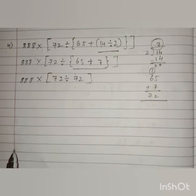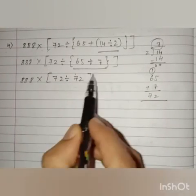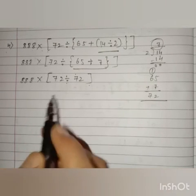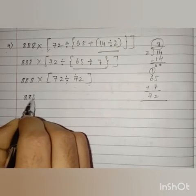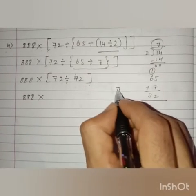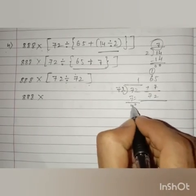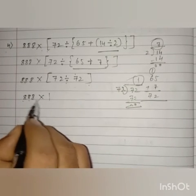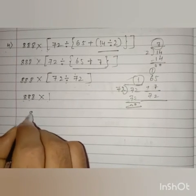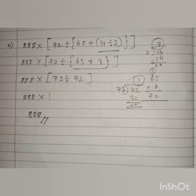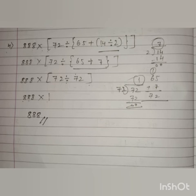After removing the curly bracket, we remove the big bracket. The operation is division: 72 divided by 72 is 1. So we have 888 into 1, which is 888. Got it, children? In the next live session, we are going to discuss question numbers 5 and 6. Thank you, children.